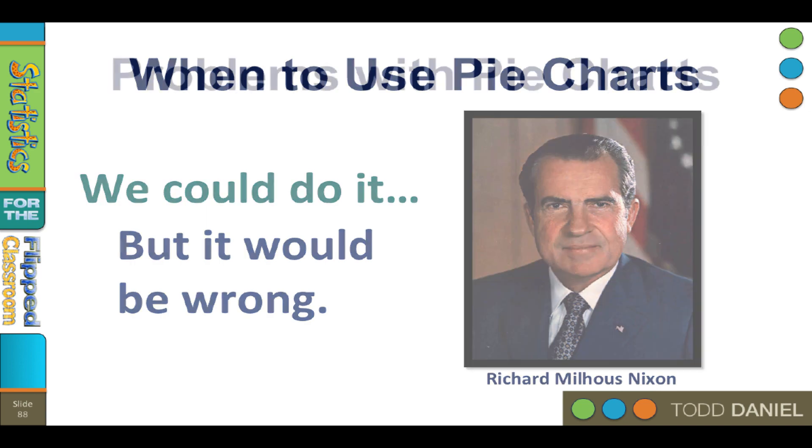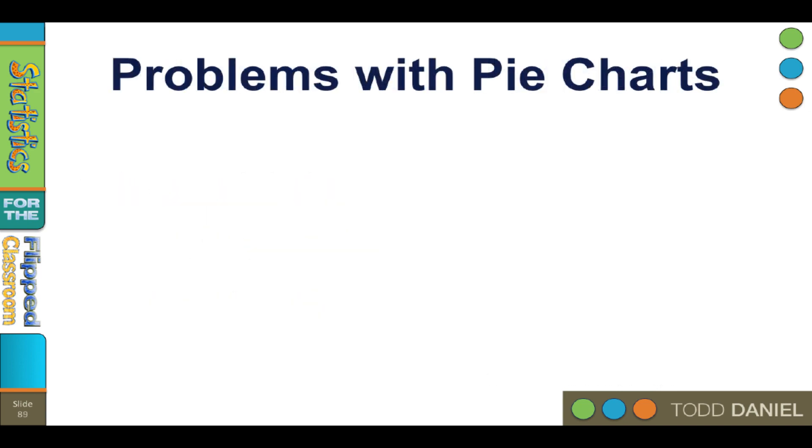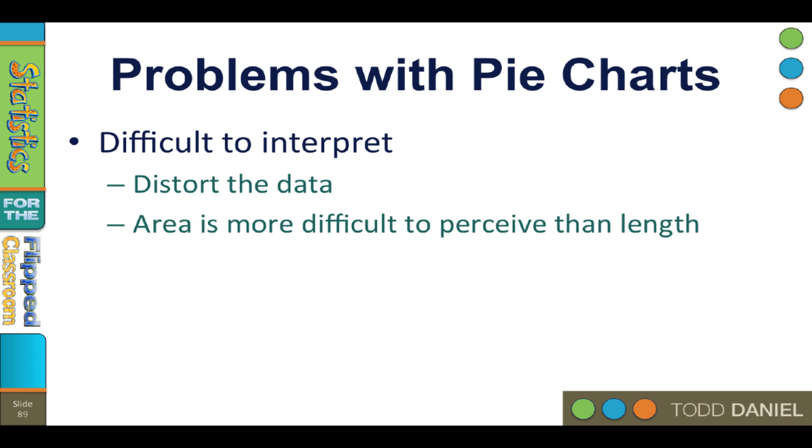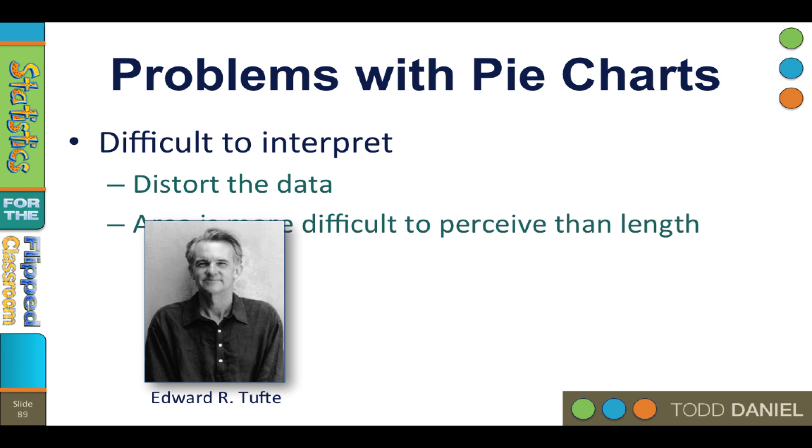You see, there's some problems with pie charts. First of all, pie charts are difficult to interpret and they tend to distort the data, thereby displaying the data poorly. Area is more difficult to perceive than length, so the data will be less easily understood than if you would simply put the same data into a bar chart. In fact, Edward Tufte said of pie charts,